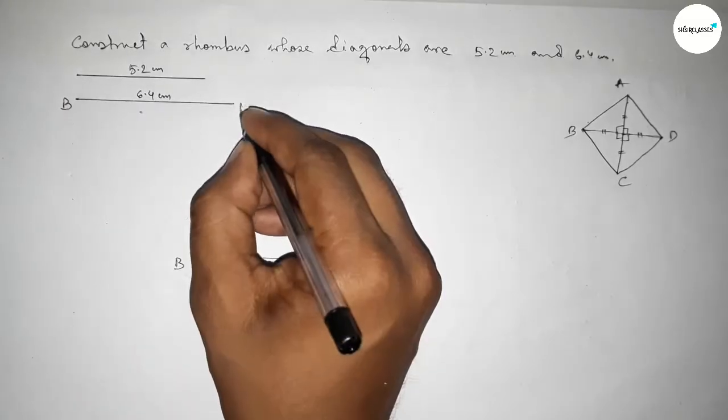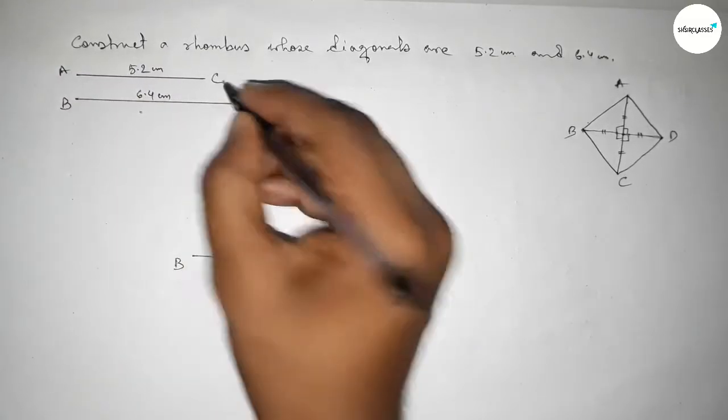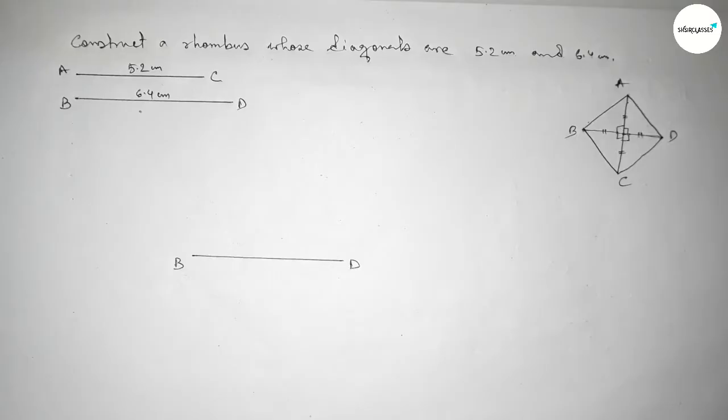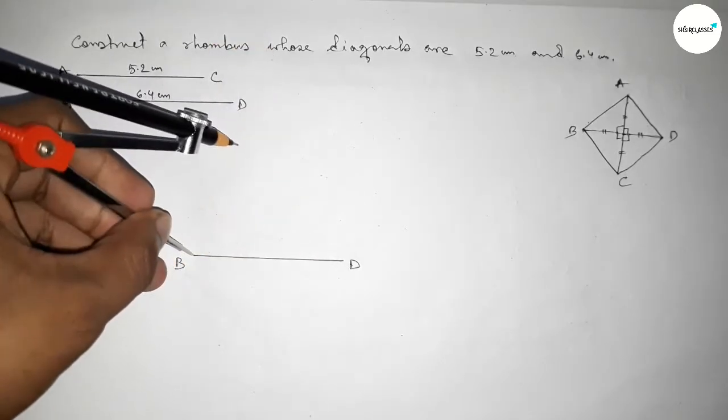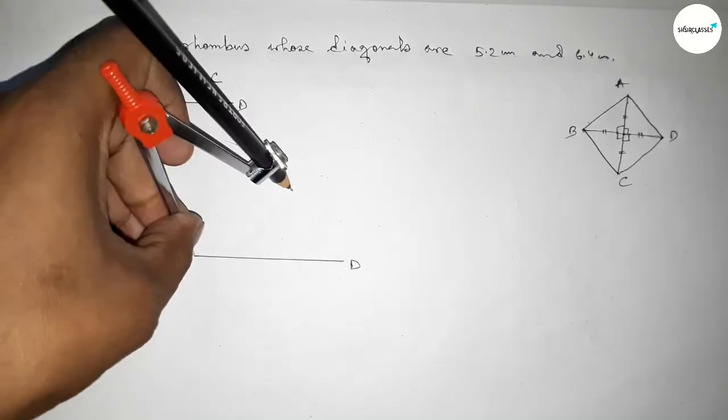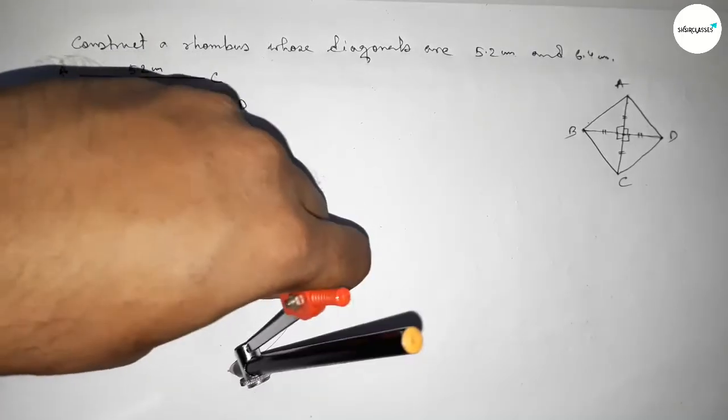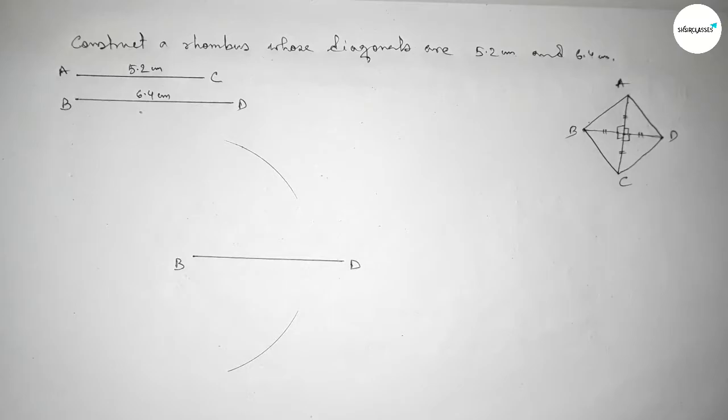This is BD and taking this as AC diagonal. Now we have to bisect the diagonal BD. First taking greater than half of this and drawing an arc by this way.